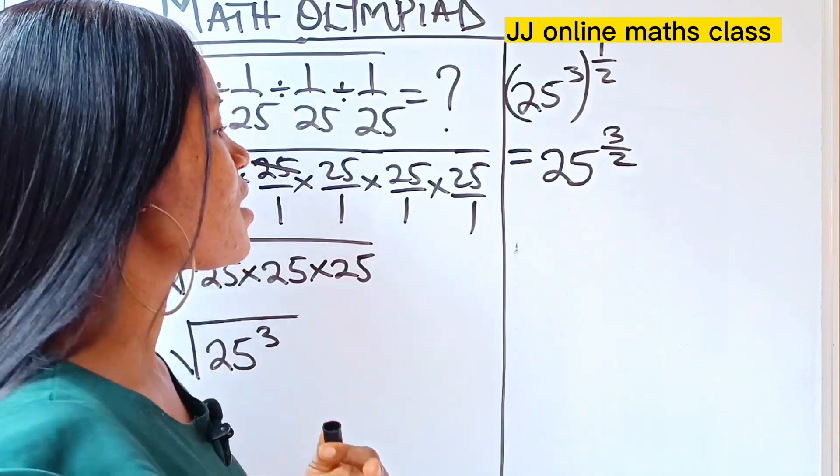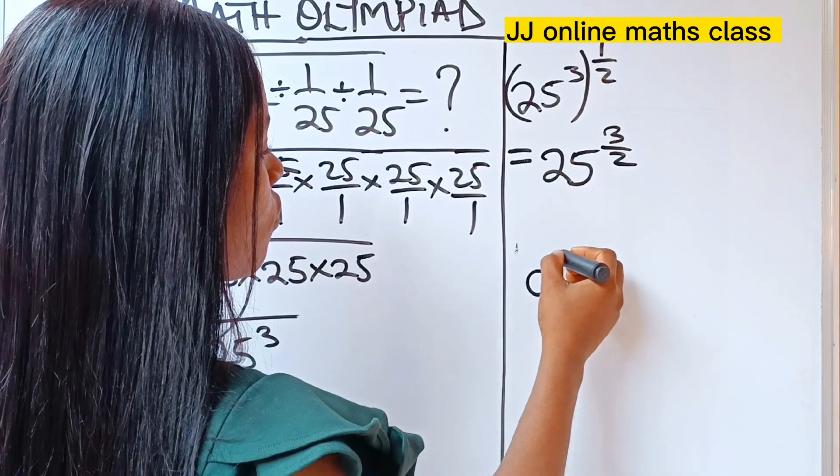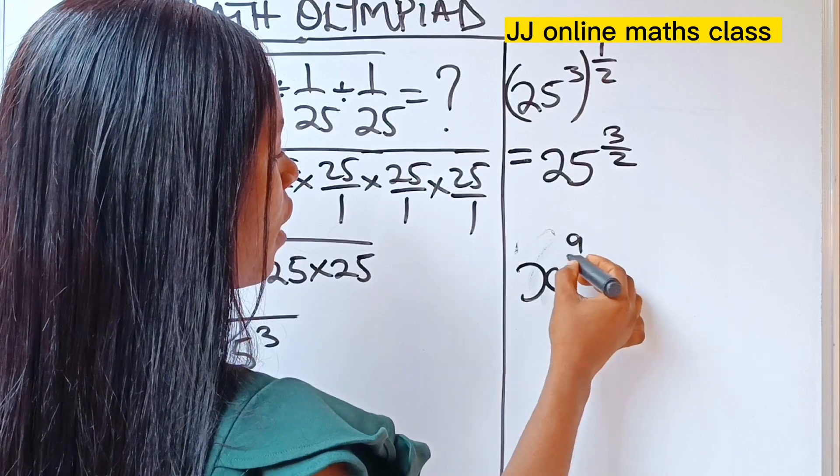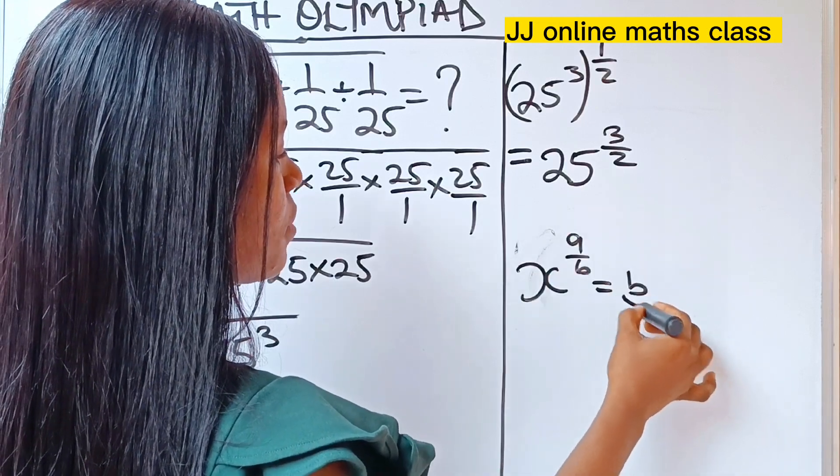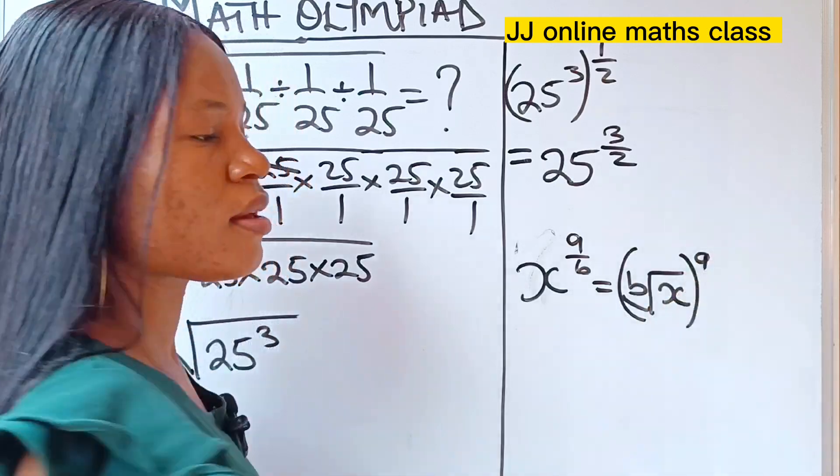There is another law of indices. And that law states that x to the power of a over b is the same thing as the bth root of x raised to the power of a.